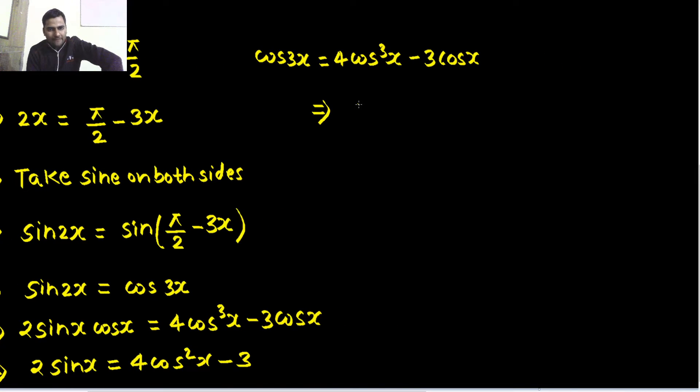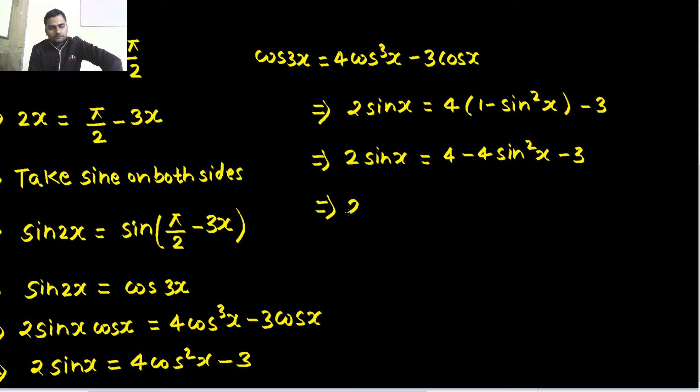Now, because we have sin x, write this cos square x also in terms of sin x. So, that way we will be having 2 sin x equals to 4 times 1 minus sin square x. So, 2 sin x plus 4 sin square x and 4 minus 3 is 1 that side, but when it will come here, it will become minus 1 equals 0. Slightly more rearrangement. So, 4 sin square x plus 2 sin x minus 1 equals 0.